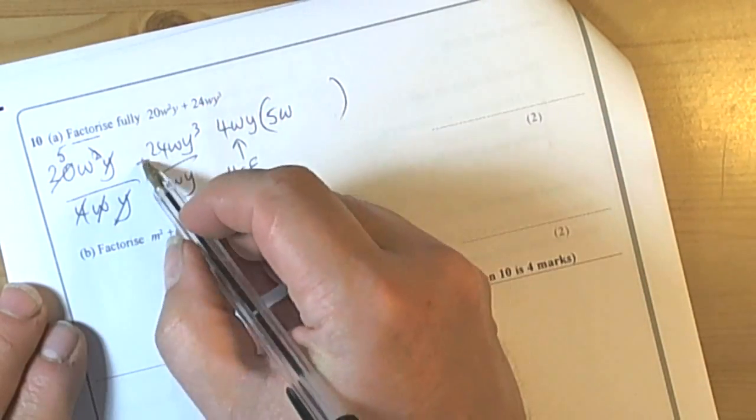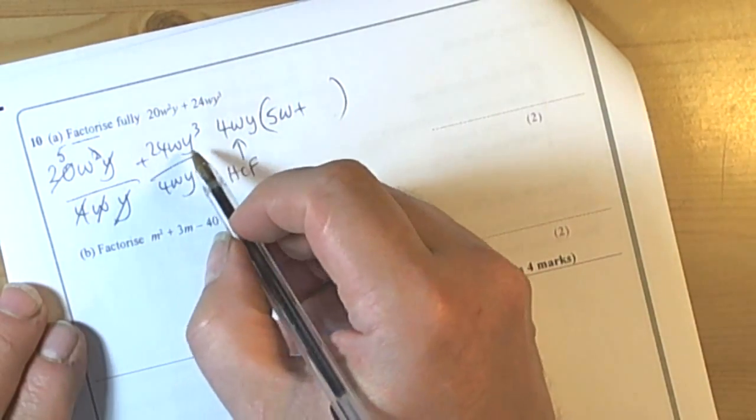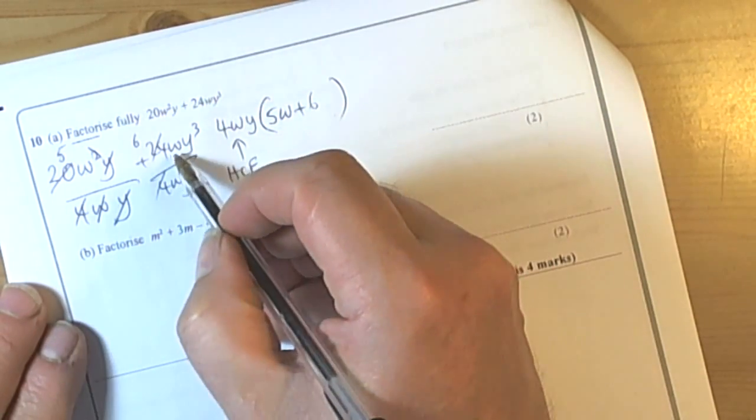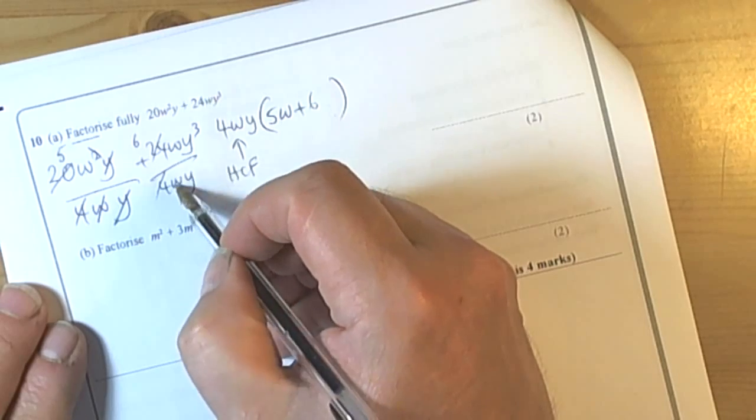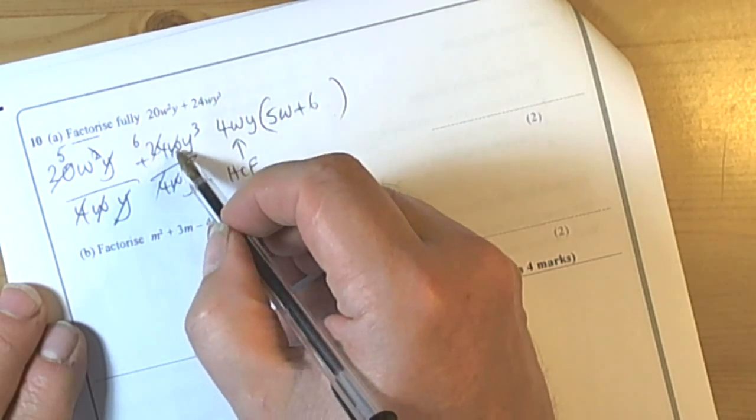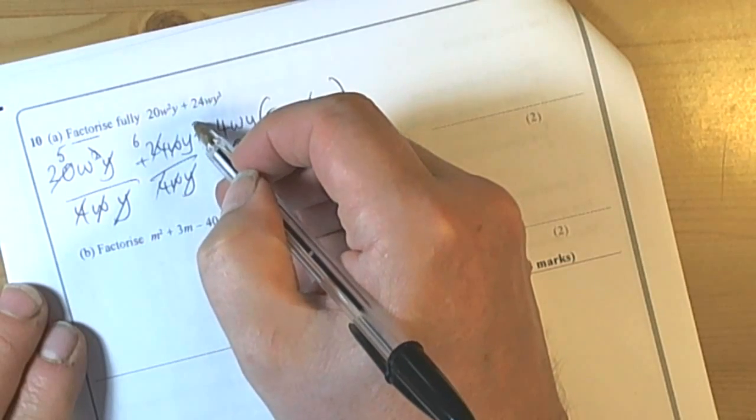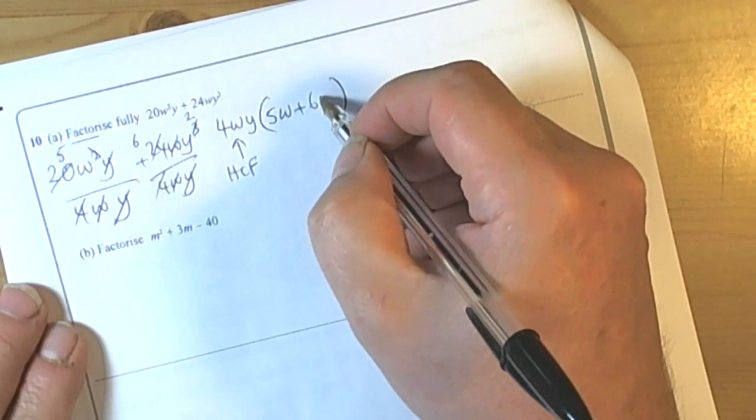So we've got a plus sign, and 24 divided by 4 is 6. W divided by W means they have cancelled to 1, so 6 times 1 is 6 still. And Y cubed divide by Y means we've changed this into a squared term.